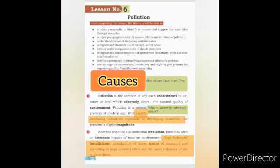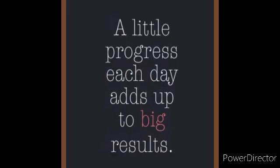Ab hum apne reading ke in do parts mein causes ya reasons of pollution dekhte hain. In part no. 1, with rapidly increasing industries especially in developing countries — yeh ek reason hai aloodgi ke badhne ki. Part no. 2 mein reason of pollution hai: scientific and industrial revolution, huge industrial installations, introduction of faster modes of transport, and spreading of large crowded cities.